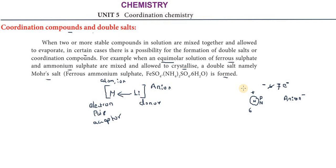To understand this concept of electron pair acceptor and donor, you need prior knowledge. The third lesson on atomic radius, ionic radius, electron affinity, and electronegativity should be clear. The second lesson on electronic configuration should be clear. Also, the 10th lesson on chemical bonding — if you don't know how electron donors or electron acceptors work, you should review that.